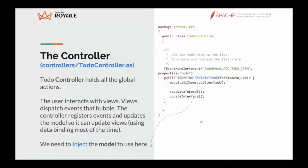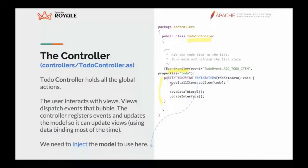Then we have the controller, which holds all global actions. We have methods marked with EventHandler that can react to all the actions we want to define in the application. Again this is in Crux, and again it's just another class without any boilerplate or extending anything. In the controller we operate on the model variable — in this case 'allItems' — to change the model, which will then make the view change through data binding.